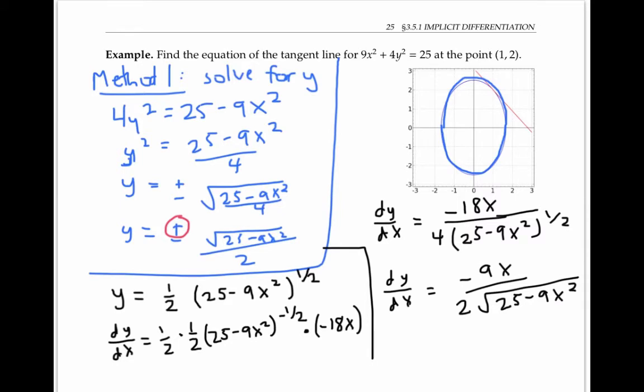This formula only holds for the top half of the ellipse. For the bottom half, we would need to use the negative. Now I want to evaluate the derivative at the point (1,2). So I'm going to take dy/dx when x equals 1, I get -9 over 2 times the square root of (25 - 9), which is -9/8.